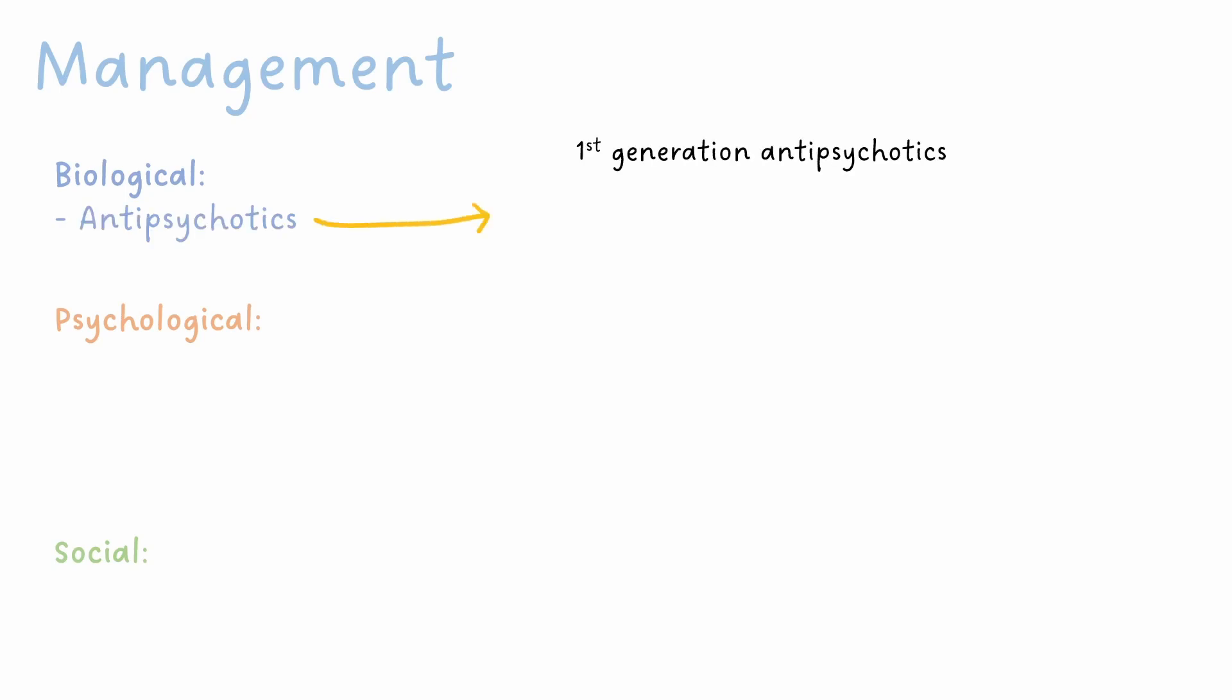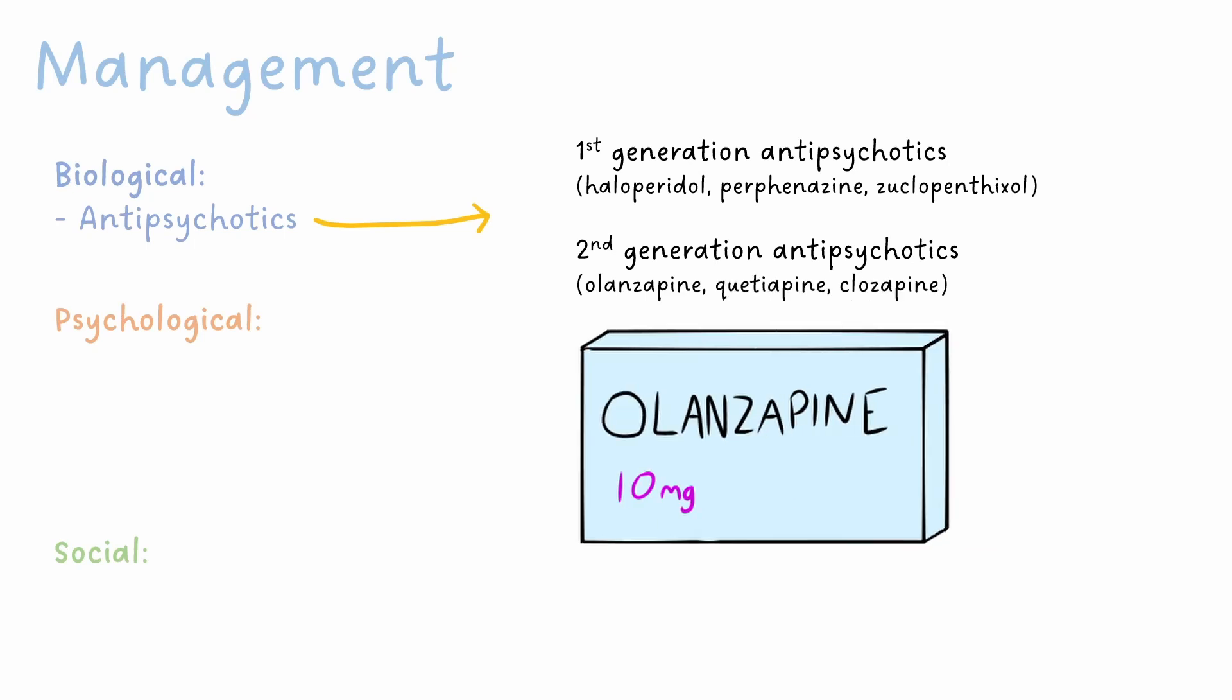When looking at management of psychiatric conditions, it's useful to split them into biological, psychological, and social therapies. Biological includes medications. In schizophrenia we use antipsychotics. First-generation antipsychotics are some of the first medications identified for this and they work by inhibiting dopamine 2 receptors, but typically cause a range of unpleasant side effects. Second-generation antipsychotics are more specific for the type of dopamine receptor they block, so theoretically produce less side effects, thus are more commonly used as first-line treatment for schizophrenia.